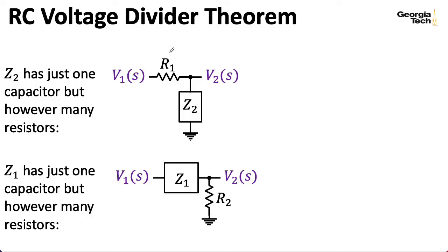So here's the setup of the theorem. We're analyzing a voltage divider, and we have a resistor in one branch and some network consisting of resistors, however many you want, but at most one capacitor in the other branch.